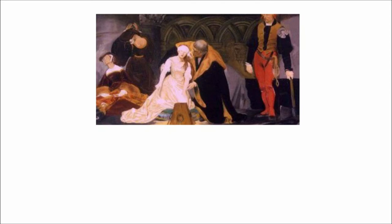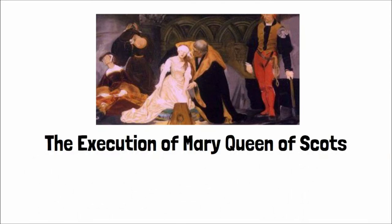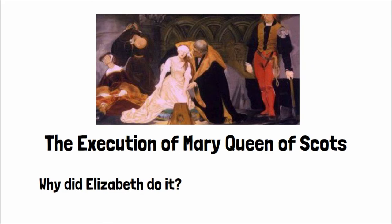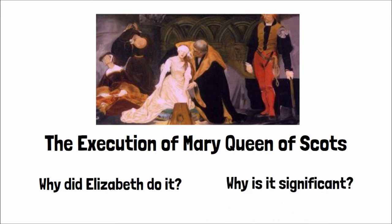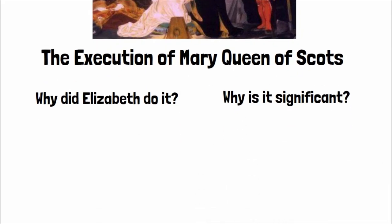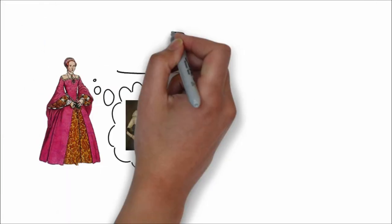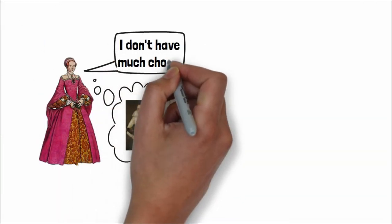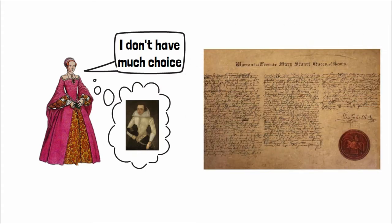Today we're going to be looking at the execution of Mary Queen of Scots. We need to know why Elizabeth chose this course of action and why it is of particular significance to history. Following on from the Babington plot, Elizabeth was left with no choice but to sign the warrant for the execution of Mary Queen of Scots in 1587.